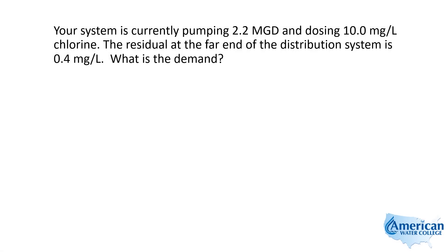In this problem we're going to calculate the chlorine demand in a distribution system. It reads: your system is currently pumping 2.2 MGD and dosing 10 milligrams per liter of chlorine. The residual at the far end of the distribution system is 0.4 milligrams per liter. What is the demand?